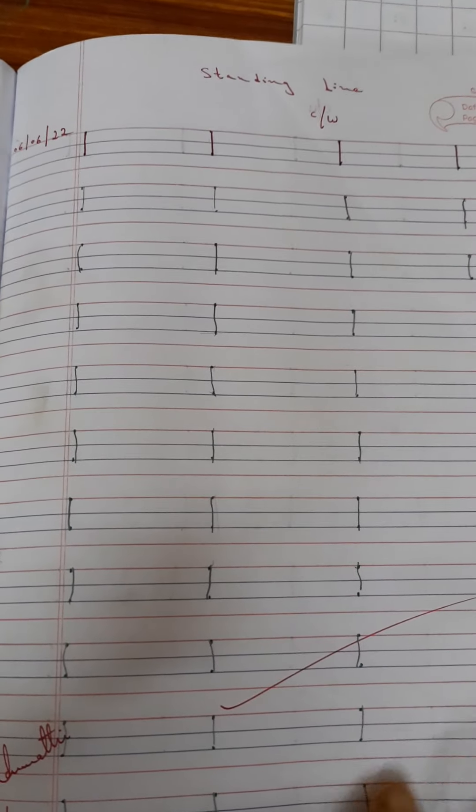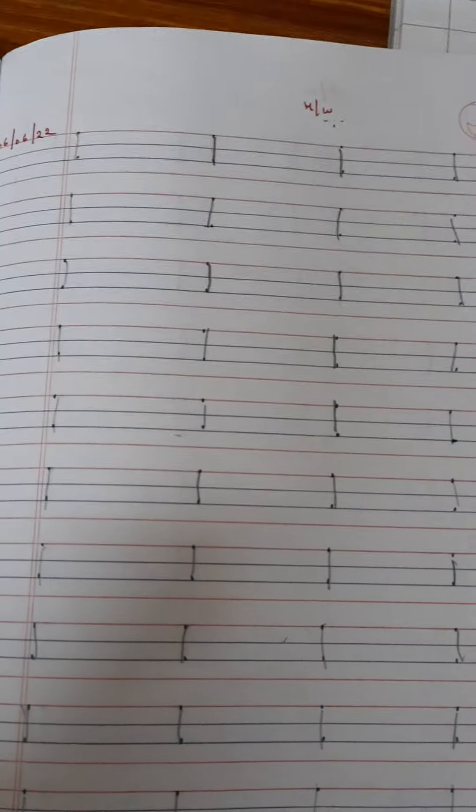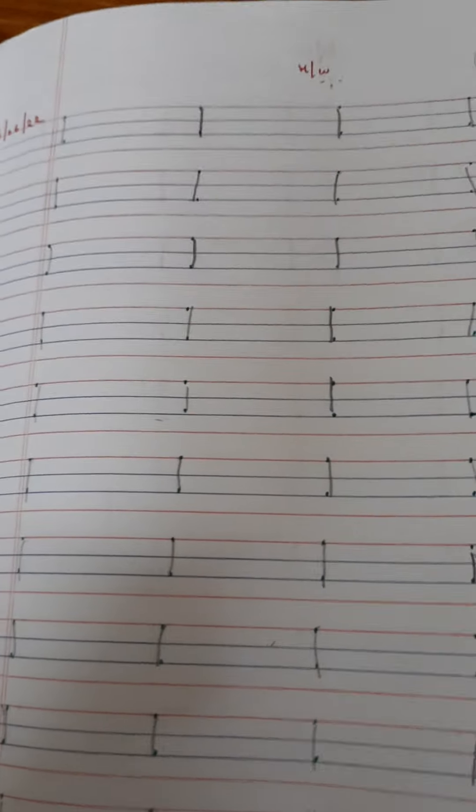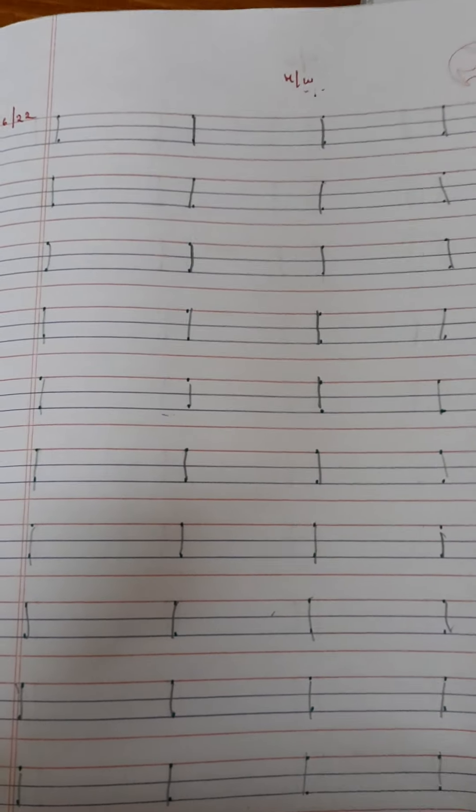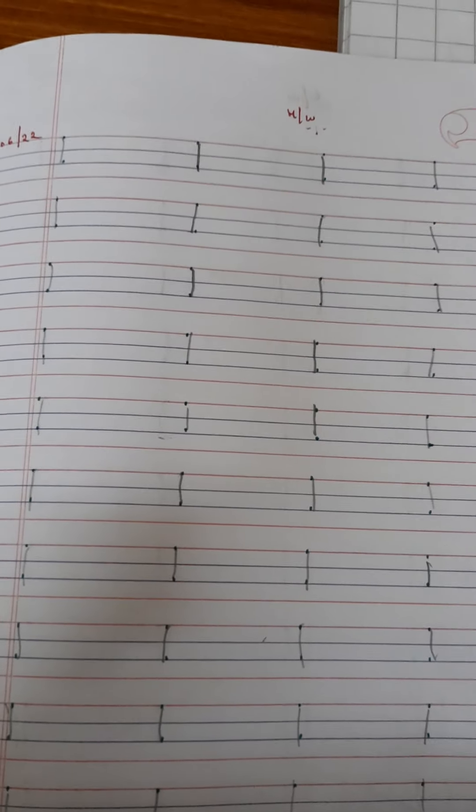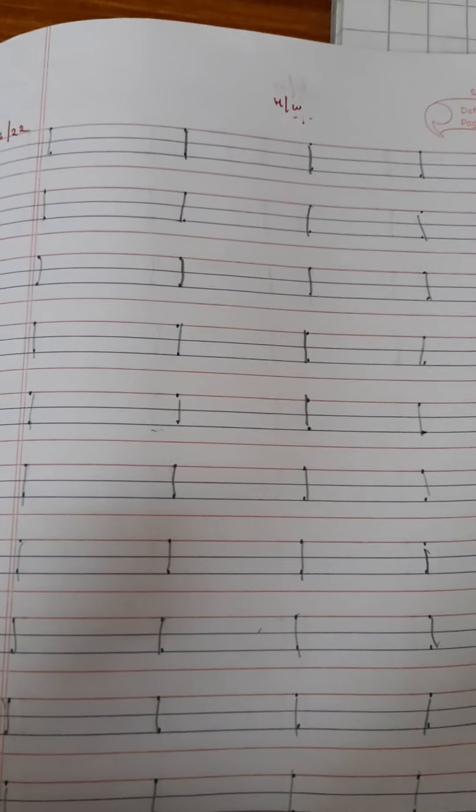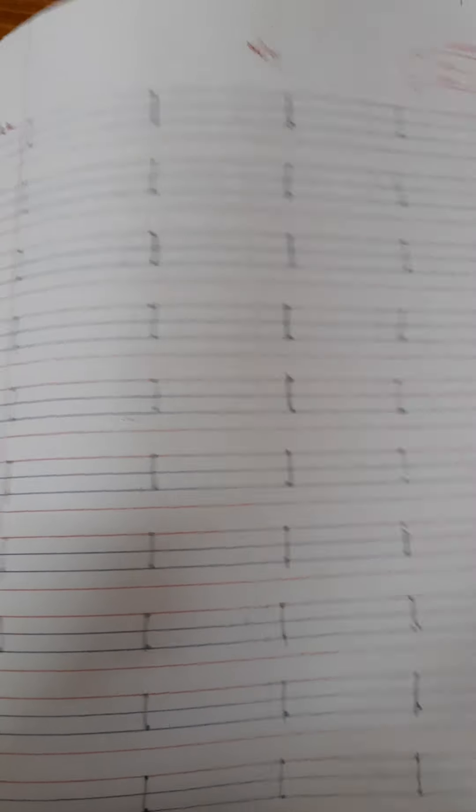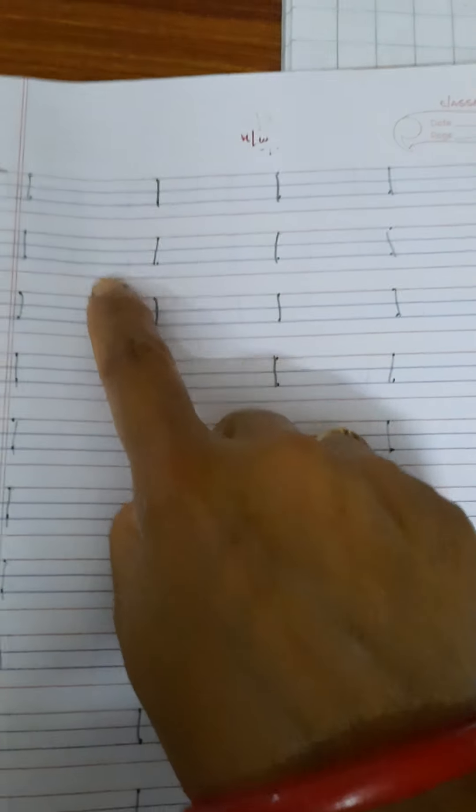In nursery class, they are writing the strokes and alphabets in a one-inch square box or a much bigger square. Now here in LKG class, the child is writing more precisely in a four-line book, so hand control is also developing.